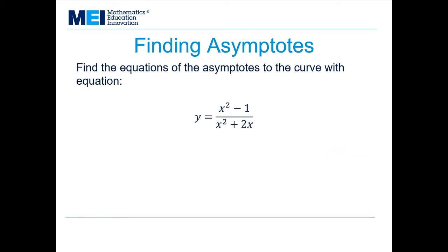Let's have a look at an example. Find the equations of the asymptotes of the curve with equation y equals x squared minus 1 over x squared plus 2x.